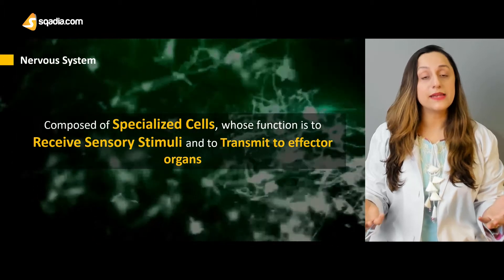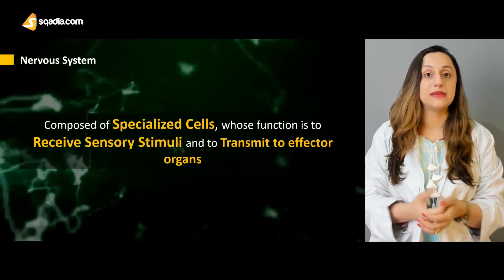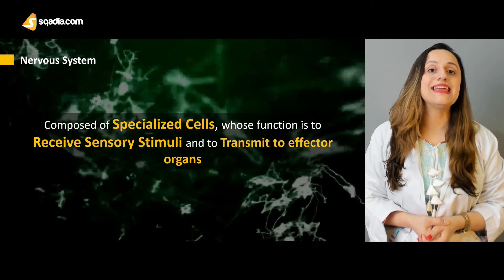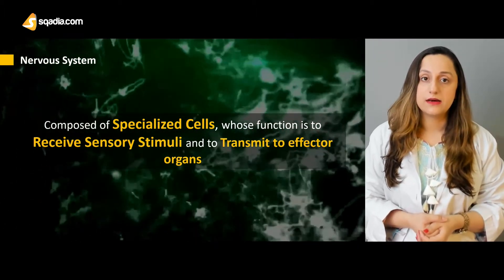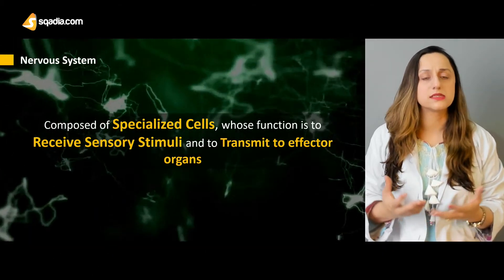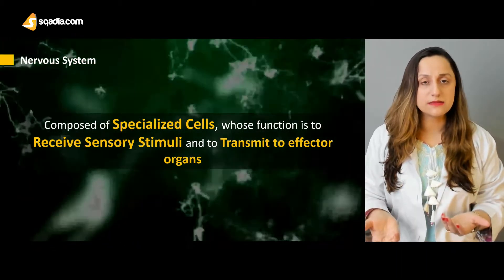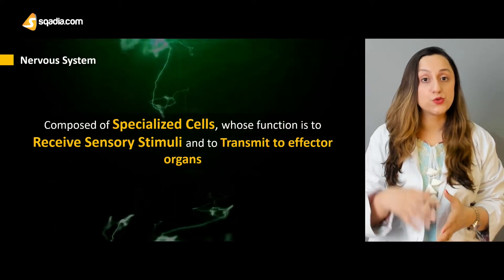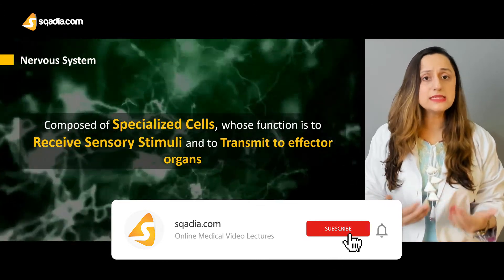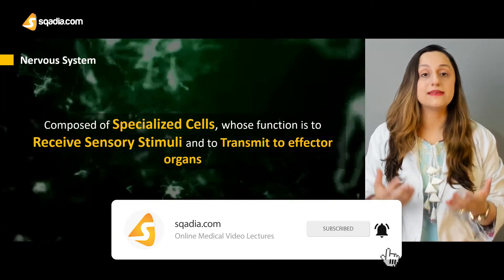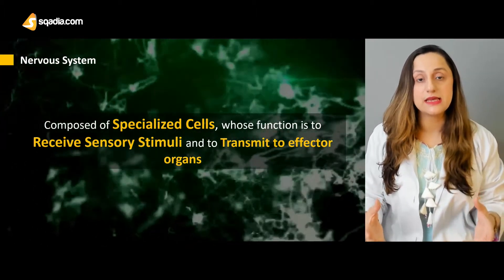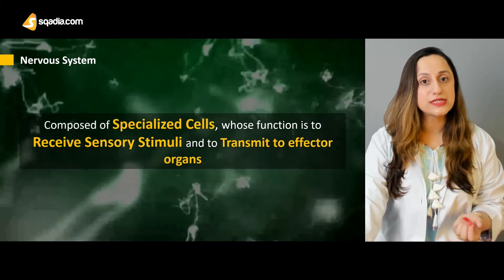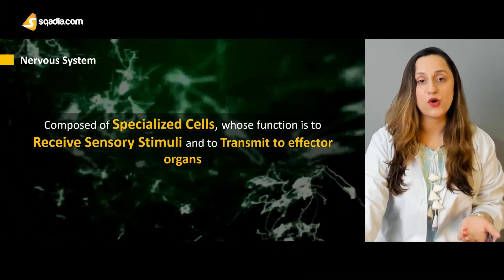The effector organs can be voluntary organs — for instance, the muscles of our body, the skeletal muscles to perform different movements — as well as involuntary actions performed by our organs, such as the heart, the smooth muscles of the small intestine, and the kidneys. So even their function is controlled by the nervous system. We'll be going through the details of the components and different structures involved in the organization of our nervous system.